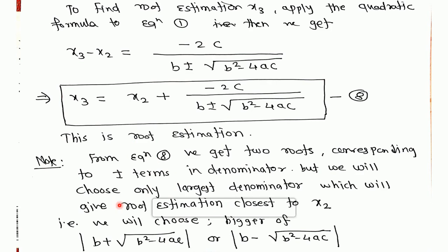But we will choose only largest denominator, which will give root estimation closest to x2, that is we are taking just only biggest value of this, that is if b plus square root of b square minus 4ac, we are calculating this and also this, we are taking a bigger value only for the root estimation.